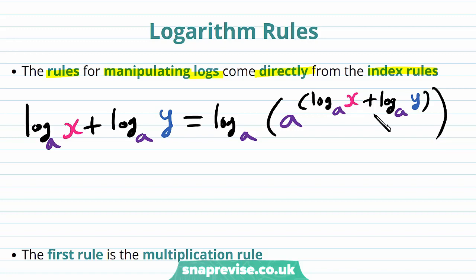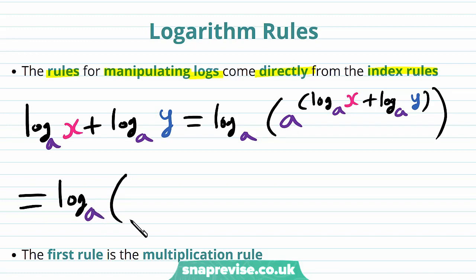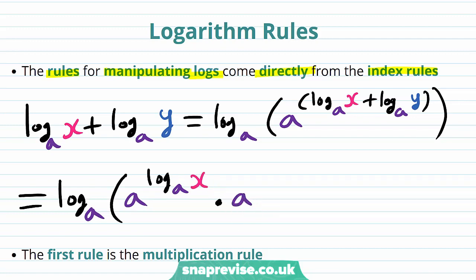But the useful thing from this is that we can actually separate these using index rules. If we look at the inside of our first logarithm, we have a to the power of log base a of x, plus log base a of y. And so we can separate these to give the log base a of a to the power of log base a of x, multiplied by a to the power of log base a of y. This is again directly from our index rules for manipulating exponentials.